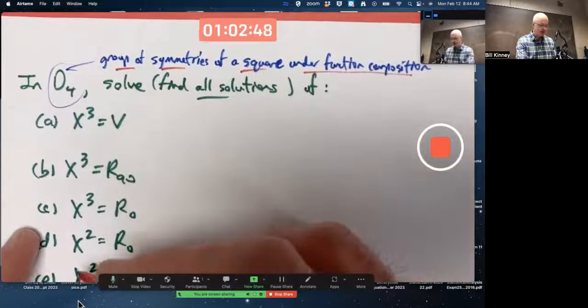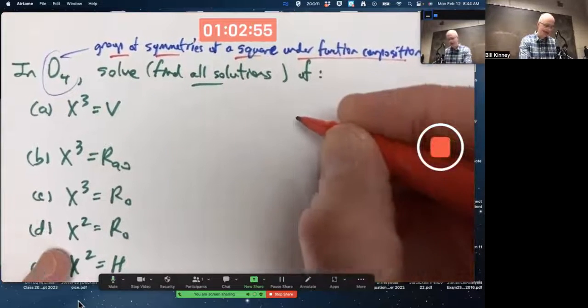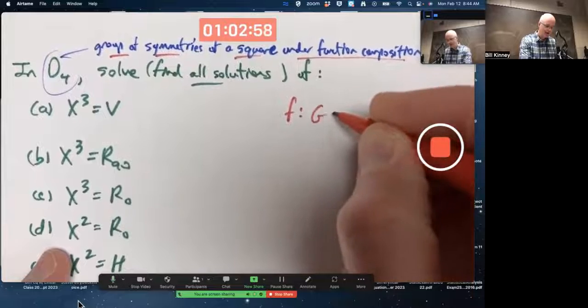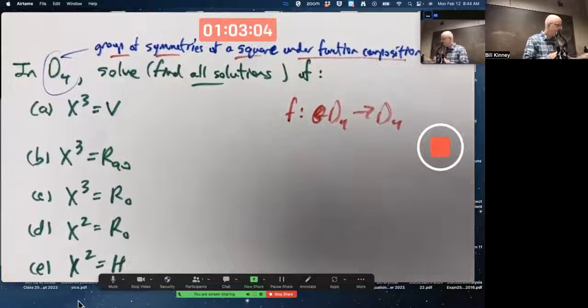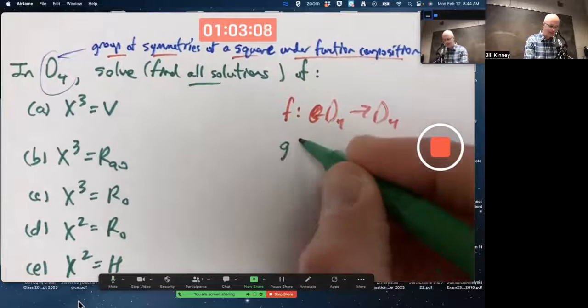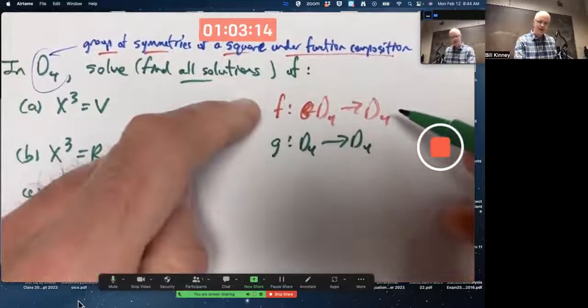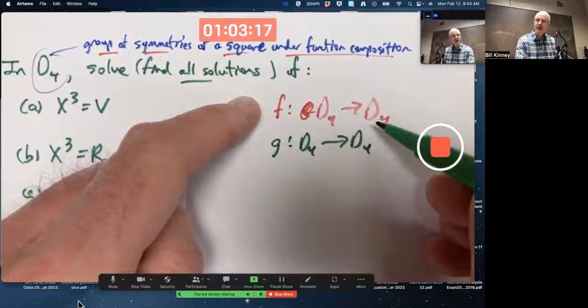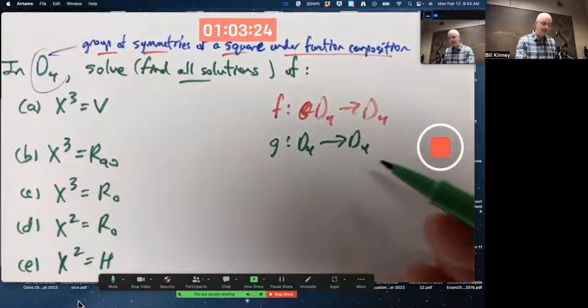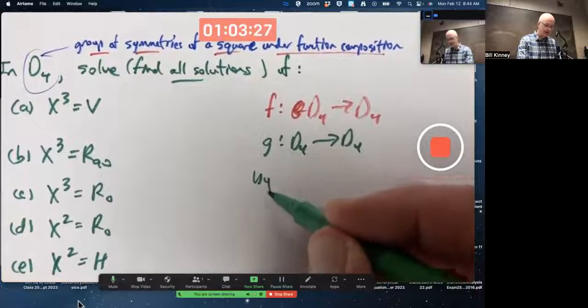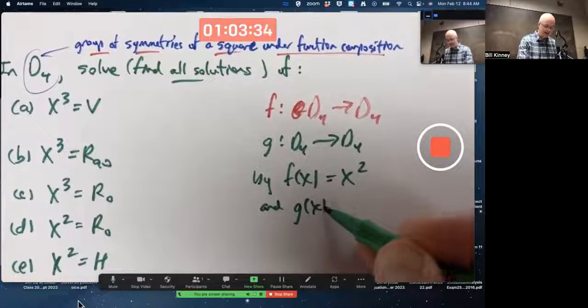You can think of these expressions on the left-hand side as being functions, if you like, functions of a variable X. You can define two functions here, this is the conceptual point, from D4 to itself, call it F and G, so I'm using arrow notation for my functions here. F is a function whose domain is D4 and whose co-domain is D4, G is a function whose domain is D4 and whose co-domain is D4. I'm going to define these functions by certain formulas: F of X equals X squared, and G of X equals X cubed.